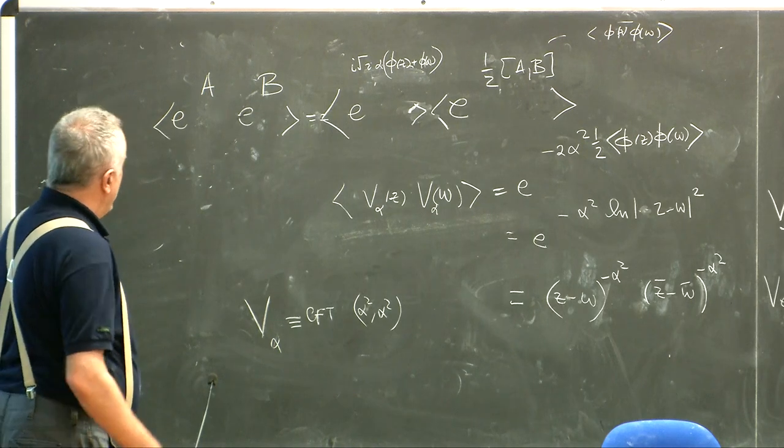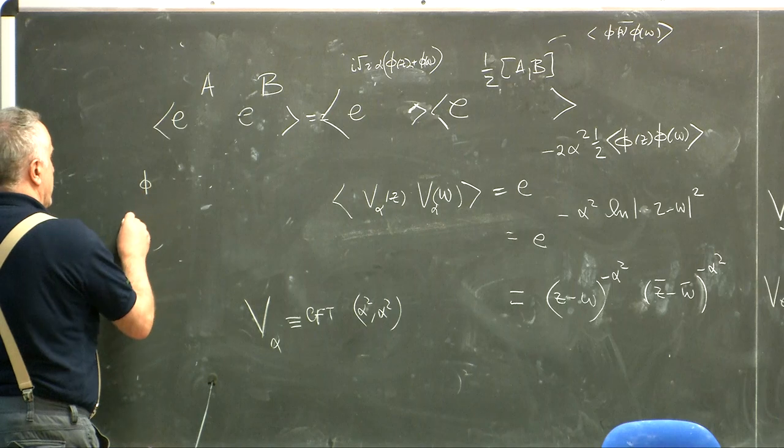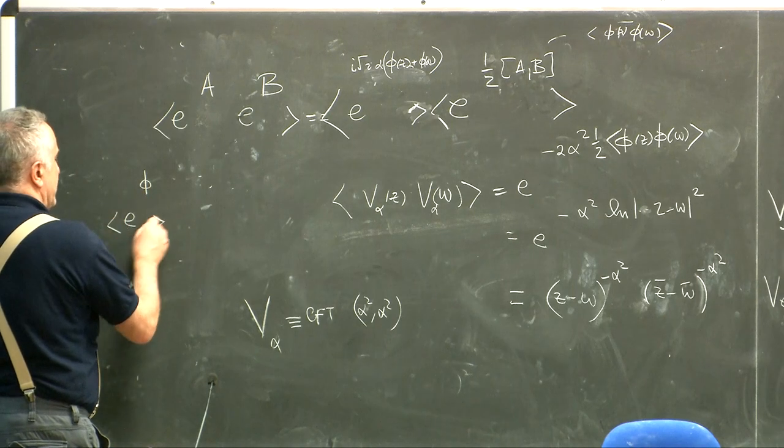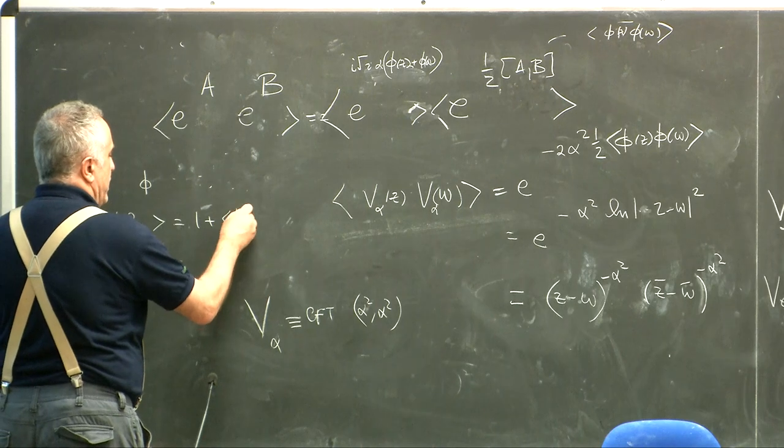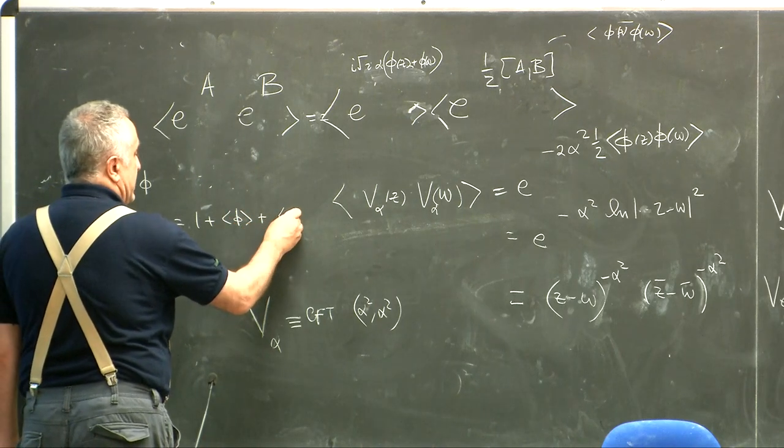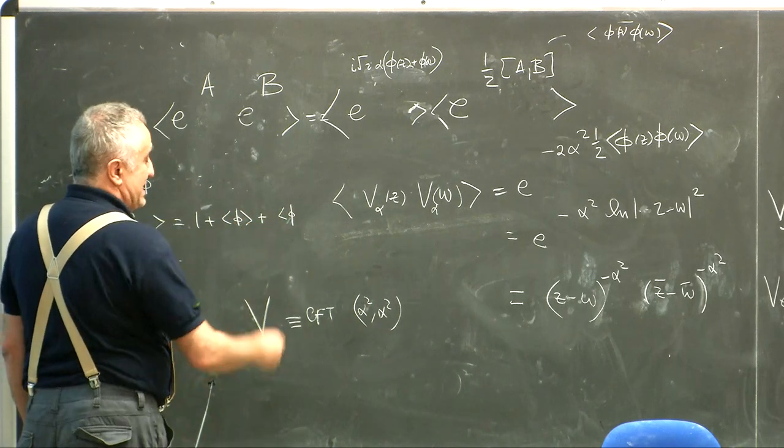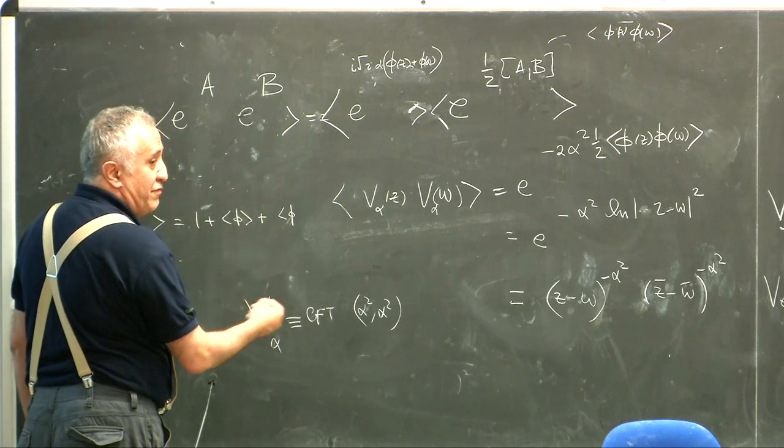Now, any operator, if you have for example phi, expectation of that is equal to 1 plus phi. And then this second term is at the same point. It is not at different points.